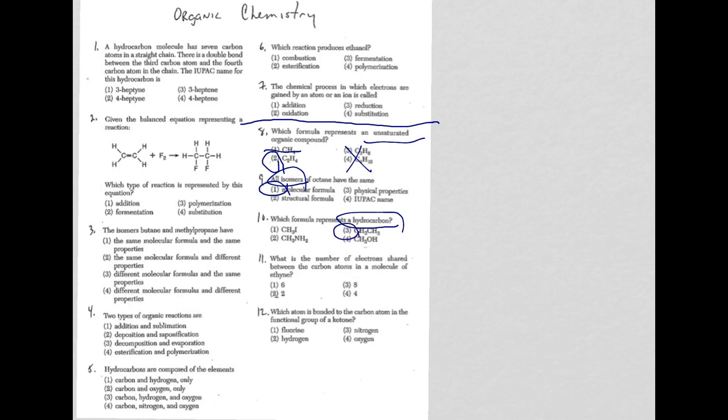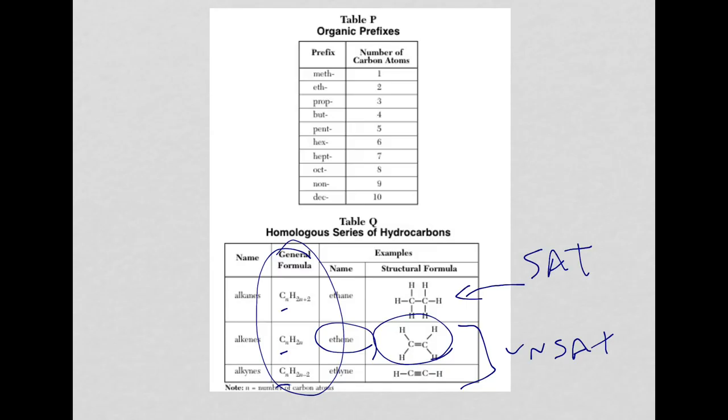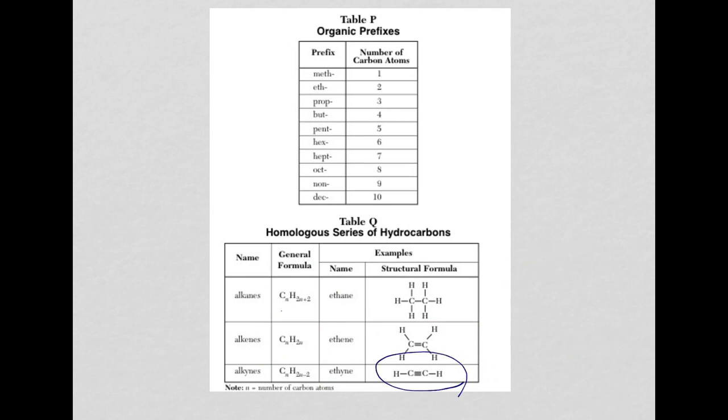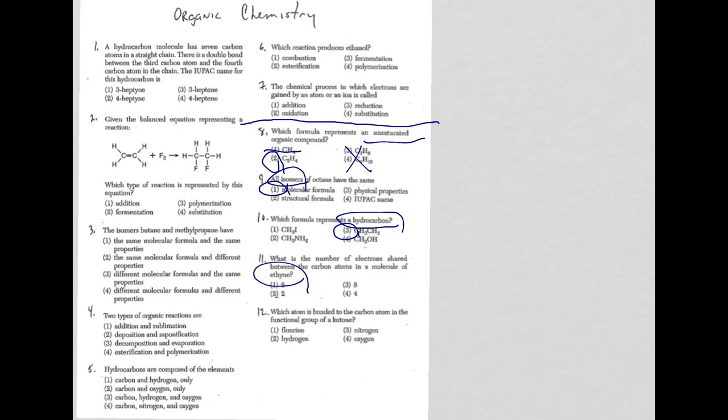Question eleven, what is the number of electrons shared between carbon atoms and a molecule of ethyne? You're not sure? Go to reference table Q. Ethyne, they even have, they're using the same one here on the table, but the Y-N-E ending tells me I have a triple bond. So, here I am. Each line of the triple bond represents two electrons. So, there's two, four, six. So, six electrons total for the triple bond. Let's go back. So, my answer, of course, is choice one.